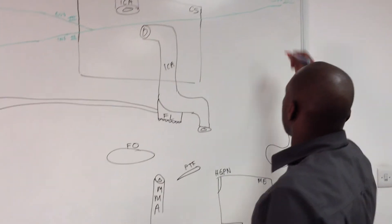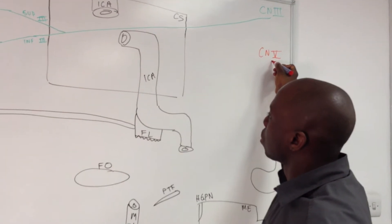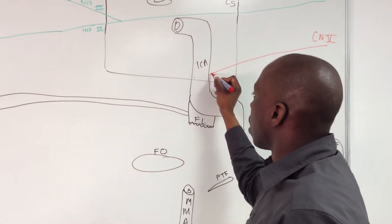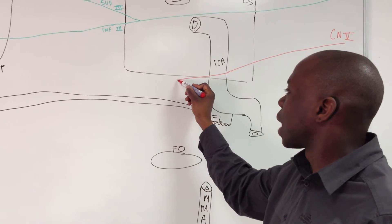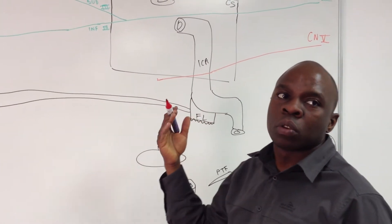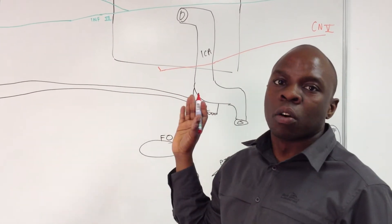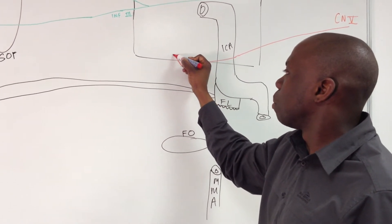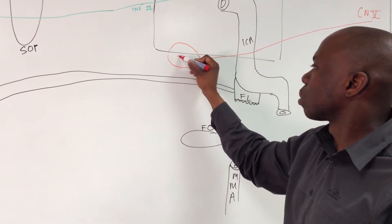Next one is going to be cranial nerve number 5, CN5, which is the trigeminal. That also comes through the cavernous sinus because it's got to get to the eyes as well. Now it's going to come through and get to its ganglion. Its ganglion is quite big — we call it the trigeminal ganglion, also known as the trigeminal bulb. It's not part of the four autonomic parasympathetic ganglia of the head and neck. It sits here and bulges its big belly into the cavernous sinus.